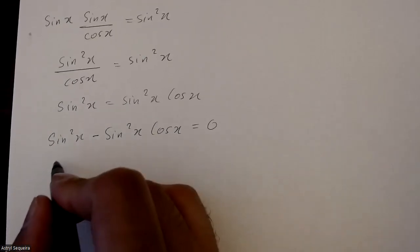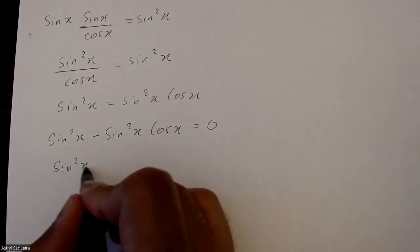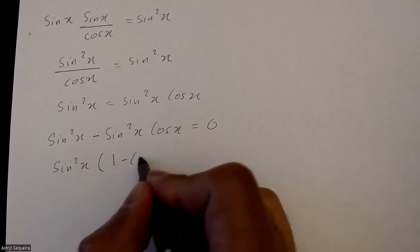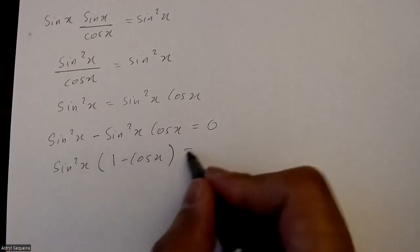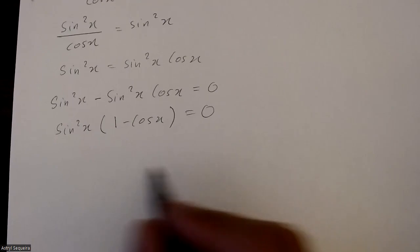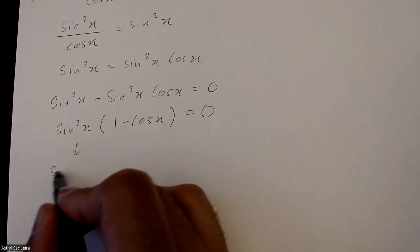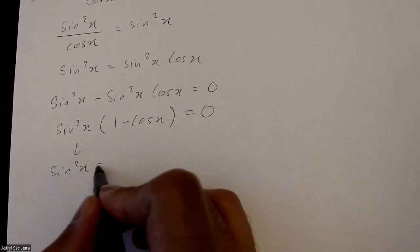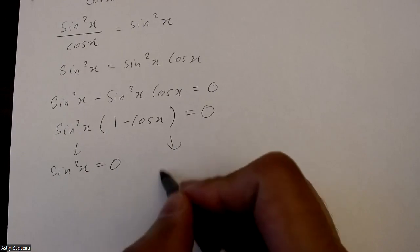Now I can factor this, so I can common factor out sine squared x and I'm left with 1 minus cos x equals 0. Now I can split this into two equations, sine squared x equals 0 or 1 minus cos x equals 0.